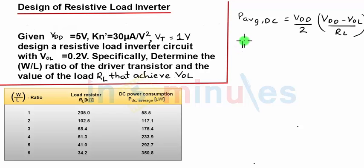This says that my power dissipation is inversely proportional to my load resistance. So if you see here on the table, when my W by L ratio is 1, we just saw that W by L into RL was nothing but 2.05 into 10 raised to 5 ohms.